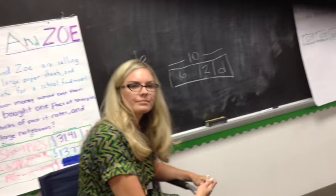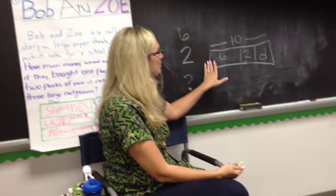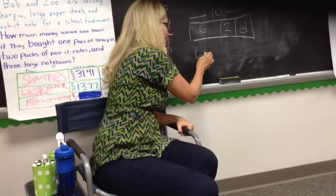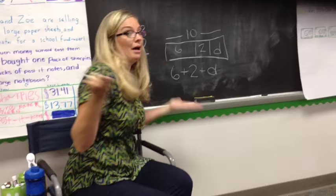Now I need to think of an equation. An equation is a number sentence that helps to solve a problem. Well, I know the total, so let me try this: six dogs plus two dogs plus I don't know how many dogs is going to equal ten.